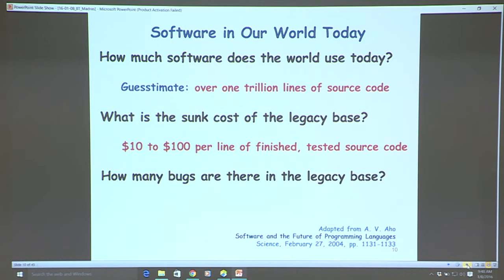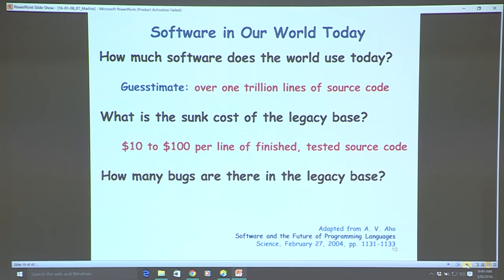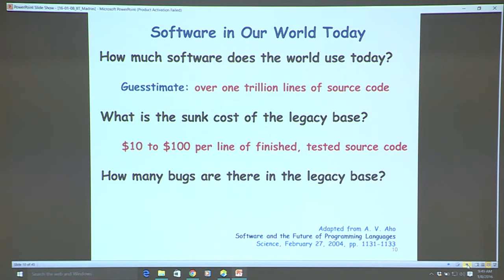What is the defect density of software? Accurate data is very hard to obtain, but I estimated defect densities range from 10 to 10,000 defects per million lines of software. Only two organizations I met could produce ultra-reliable software: those creating software for therapeutic medical devices and those creating software for deep space missions. Typical industrial defect density seemed to be somewhere between 1,000 and 10,000 defects per million lines.